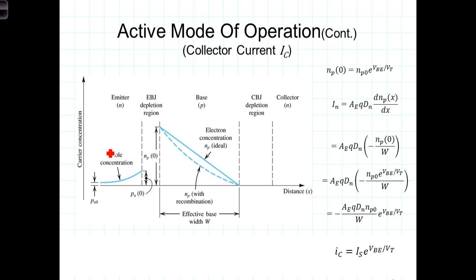We'll start by deriving the collector current. The collector current is approximately equal to the change of electron concentration across the base — that is, the change in concentration of electrons from the emitter-base junction to the base-collector junction. I_C differs slightly from that because of recombination.